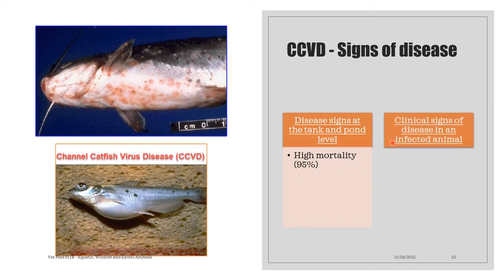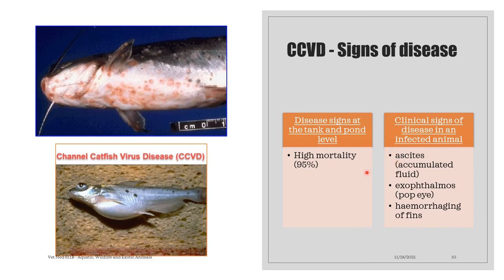For the clinical signs of the disease in an infected animal, this includes ascites due to the accumulation of fluid, exophthalmia or the popping of the eye, and hemorrhaging of the fins. In this diagram, we have a fish infected with CCVD showing hemorrhaging of the ventral abdomen as well as the fins. We also have a CCVD-affected channel catfish fingerling, noting the swollen stomach and pop eye that exhibit the clinical signs of channel catfish virus disease.